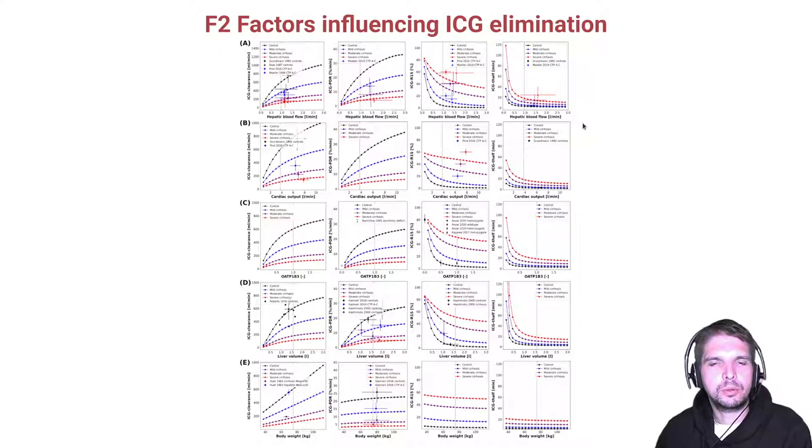First of all, we were interested in various factors influencing ICG elimination. Therefore, we looked at key parameters such as ICG clearance, PDR, R15, and T-HALF and their dependency on factors such as hepatic blood flow, cardiac output or ATP1B3, the liver volume or the body weight. The data is in very good agreement with clinical data for healthy subjects and various degrees of cirrhosis.